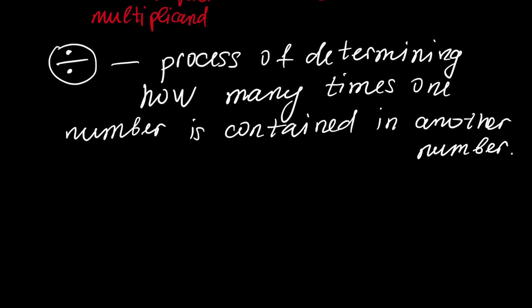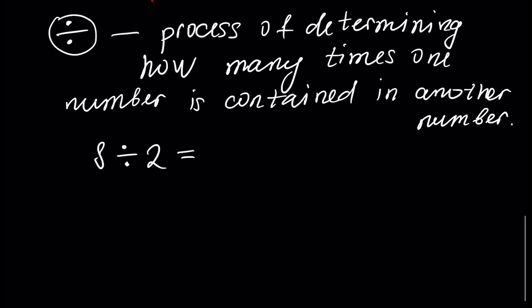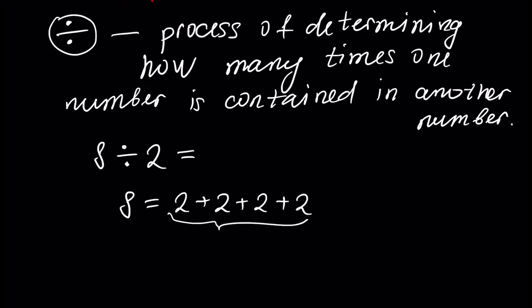For example, eight divided by 2. Because we can write 8 as equal to 2 plus 2 plus 2 plus 2, four times. That's why 2 is contained in 8 four times, so the result is 4.